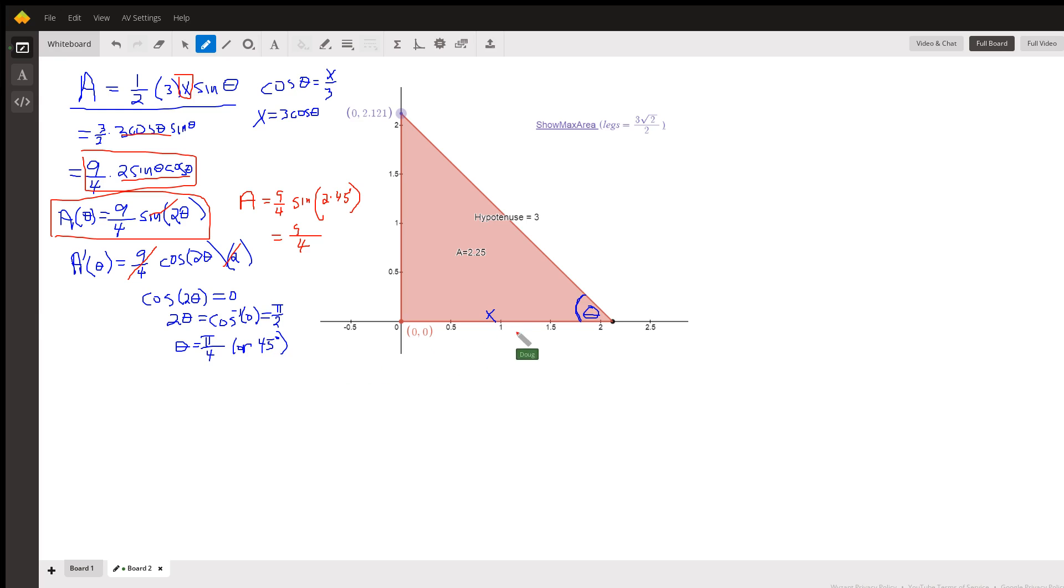There we go. Another right triangle. And if we want to find the area based on theta, there's the formula. Nine fourths sine of two times pi over four, two times 45. That's the sine of 90, which is one. Same area.